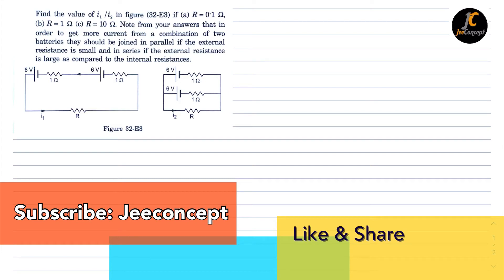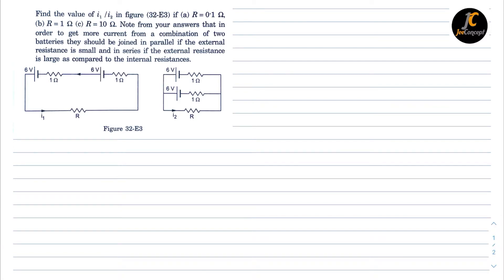In this problem we have to find the value of i1 by i2 in the given figure, where for part a R is 0.1 ohm, for part b R is 1 ohm, and for part c R is 10 ohm. There are basically two figures: in the first scenario the cells are connected in series, and in the second scenario the cells are connected in parallel.